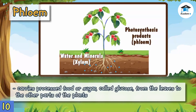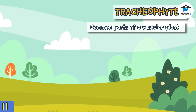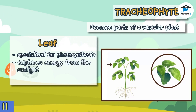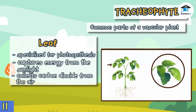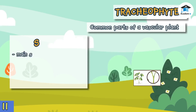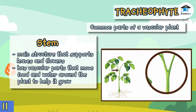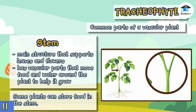Phloem is the vessel that carries processed food or sugar called glucose from the leaves to the other parts of the plant. Most vascular plants or tracheophytes have the following parts: leaf is an organ specialized for photosynthesis — it captures energy from sunlight and collects carbon dioxide from the air. Stem is the main structure that supports leaves and flowers; stems have vascular parts that move food and water around the plant to help it grow. Some plants can store food in the stem.